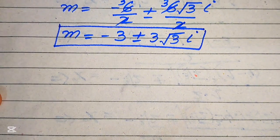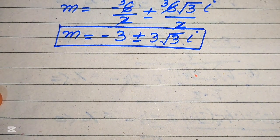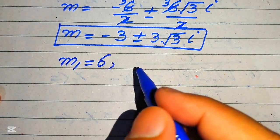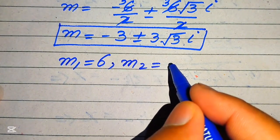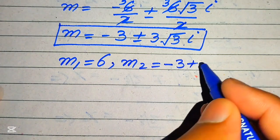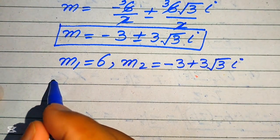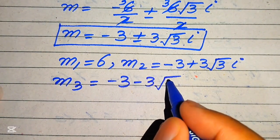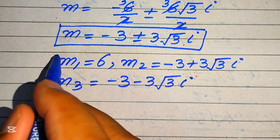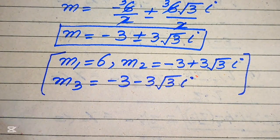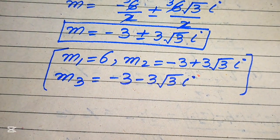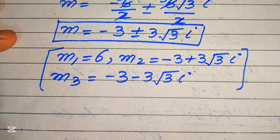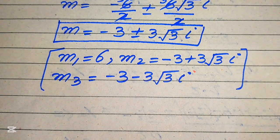So finally we have three roots of the given equation: the first real root is m₁ equals 6; the second root is m₂ equals minus 3 plus 3 times the square root of 3 iota; and the third root is m₃ equals minus 3 minus 3 times the square root of 3 iota. I hope you liked this method. If you have another method in mind, please write it in the comment section. Thank you for watching — please subscribe to my channel for more exciting videos.